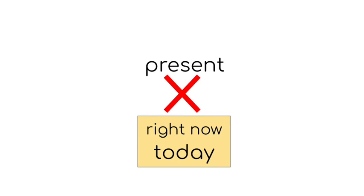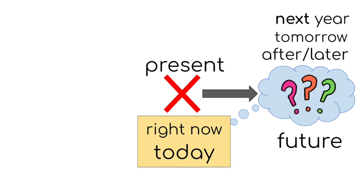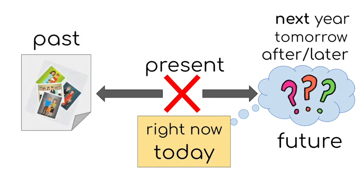we already learned about the future, which is after or later or tomorrow or next year. This is the future and there are question marks because we don't really know what is going to happen in the future. Now, if instead of going forward in time, we go back. This is the past.